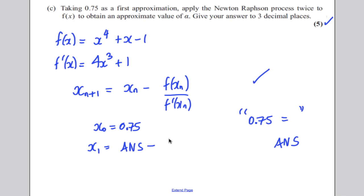Now, f of this, well, that would just be ans to the power of 4 plus ans, subtract 1, all divided by 4 ans cubed plus 1. So, if you type that in your calculator, so 0.75 equals, and then you do ans, subtract, and then a fraction, ans to the power of 4 plus ans, subtract 1, all over 4 ans cubed plus 1.